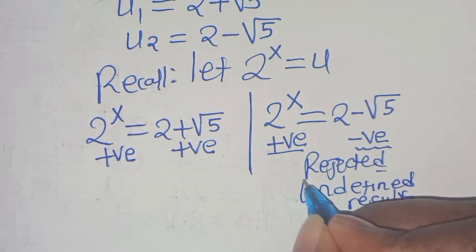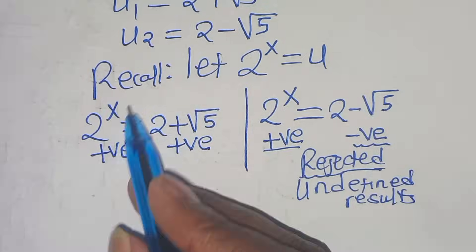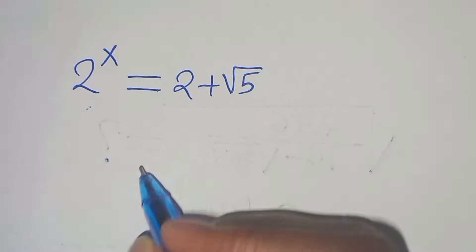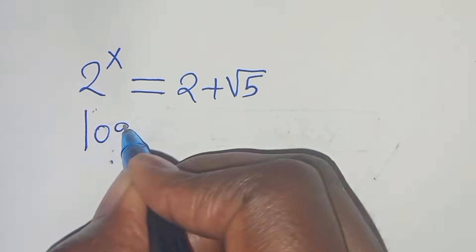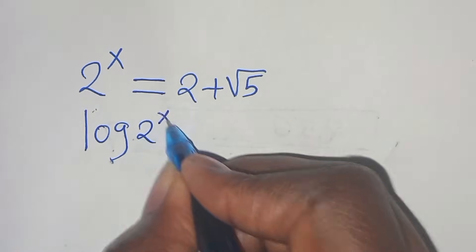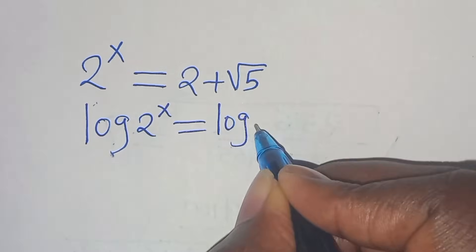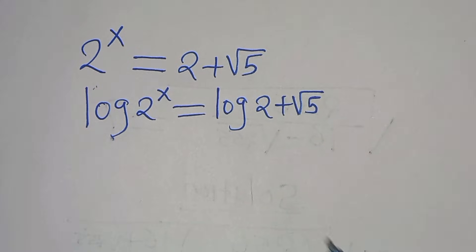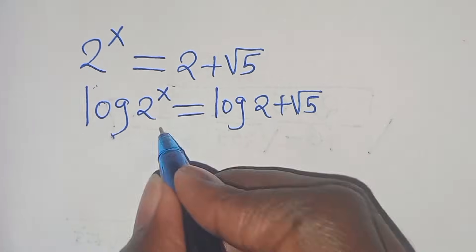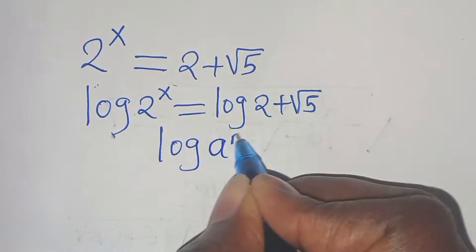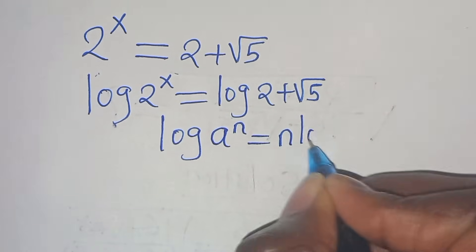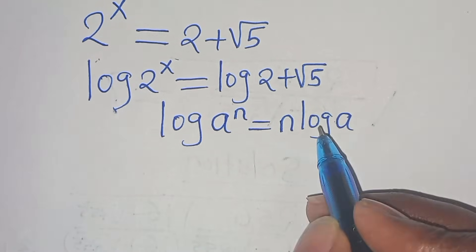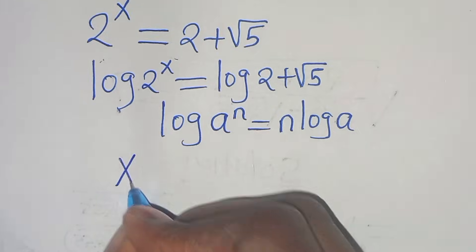The second part is rejected, so we proceed with 2 to the power of x equals 2 plus square root of 5. To solve for x, we introduce logarithms on both sides: log of 2 to the power of x equals log of (2 plus square root of 5). Using the power rule of logarithms, x log 2 equals log(2 + √5).